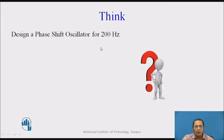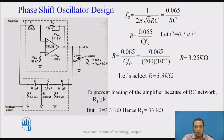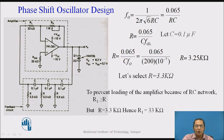We want to design an oscillator for a frequency of 200 Hz. Rearranging the equation gives R = 0.065 / (C × F₀). In this equation, F₀ = 200 is known, but there are two unknowns: R and C. This is typical in electronic design problems where you have one equation and two unknown variables. This can be solved by assuming either R or C. Usually we assume C because we have very limited choices available. Assuming C = 0.1 µF, substituting into the equation gives R = 3.25 kΩ.